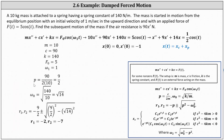Going back to our work, we have p = 90/20, which equals 9/2. Omega sub zero equals the square root of k/m, which simplifies to the square root of 14. r₁ and r₂ equal negative p plus or minus the square root of p² minus ω₀², which simplifies to r₁ = -2 and r₂ = -7. Because we have two distinct real roots, x_c is in the form c₁e^(r₁t) + c₂e^(r₂t), giving us x_c = c₁e^(-2t) + c₂e^(-7t).